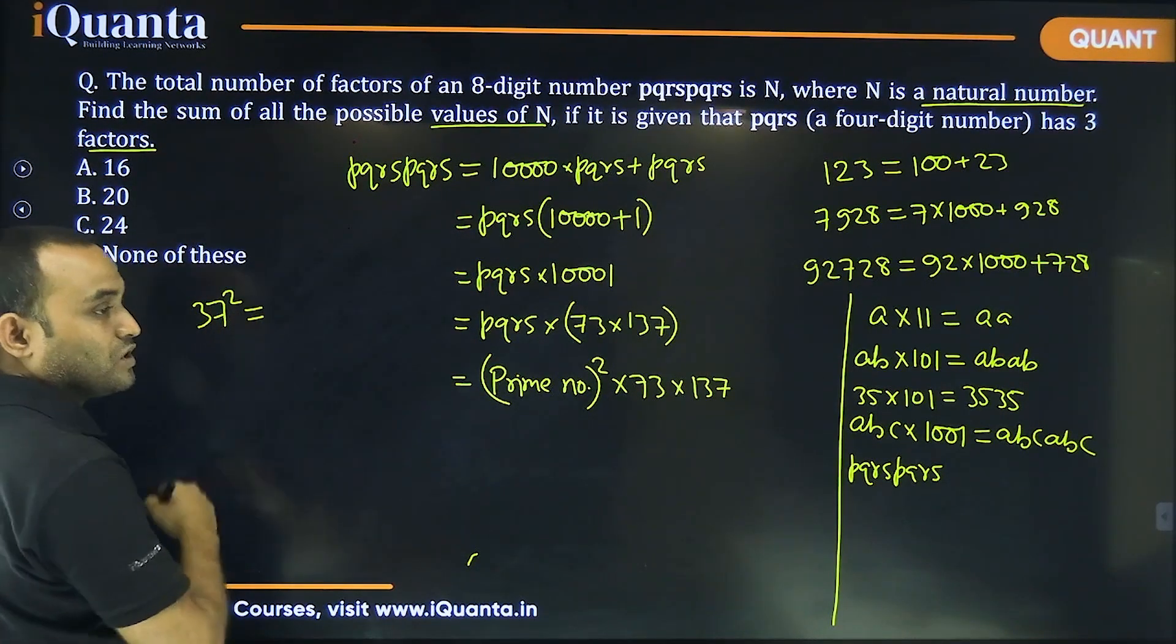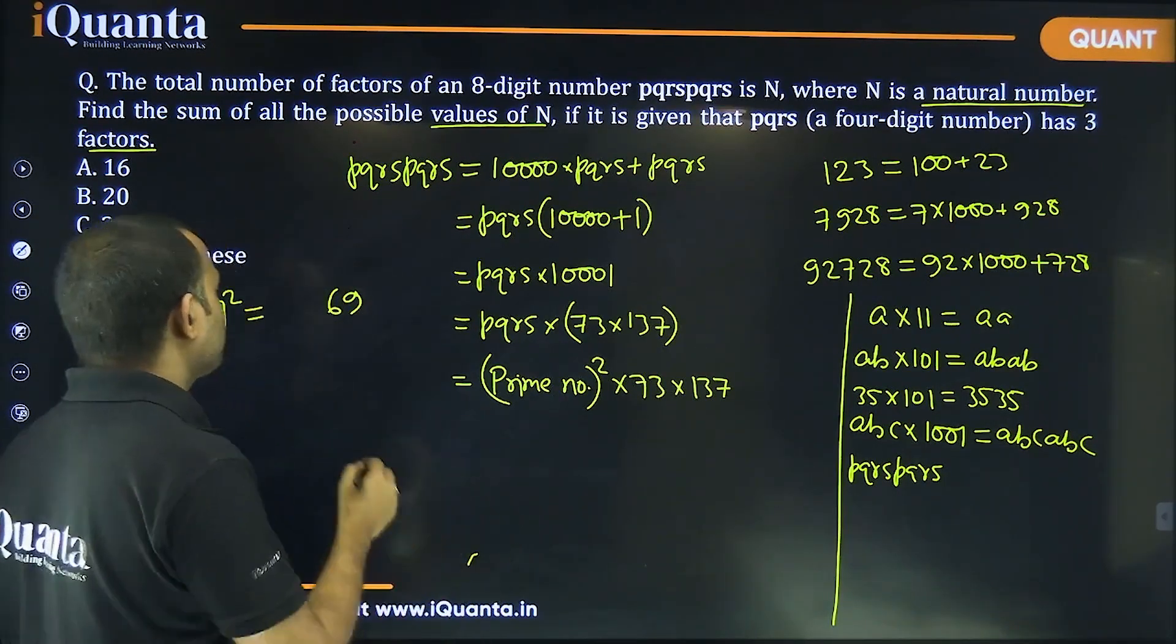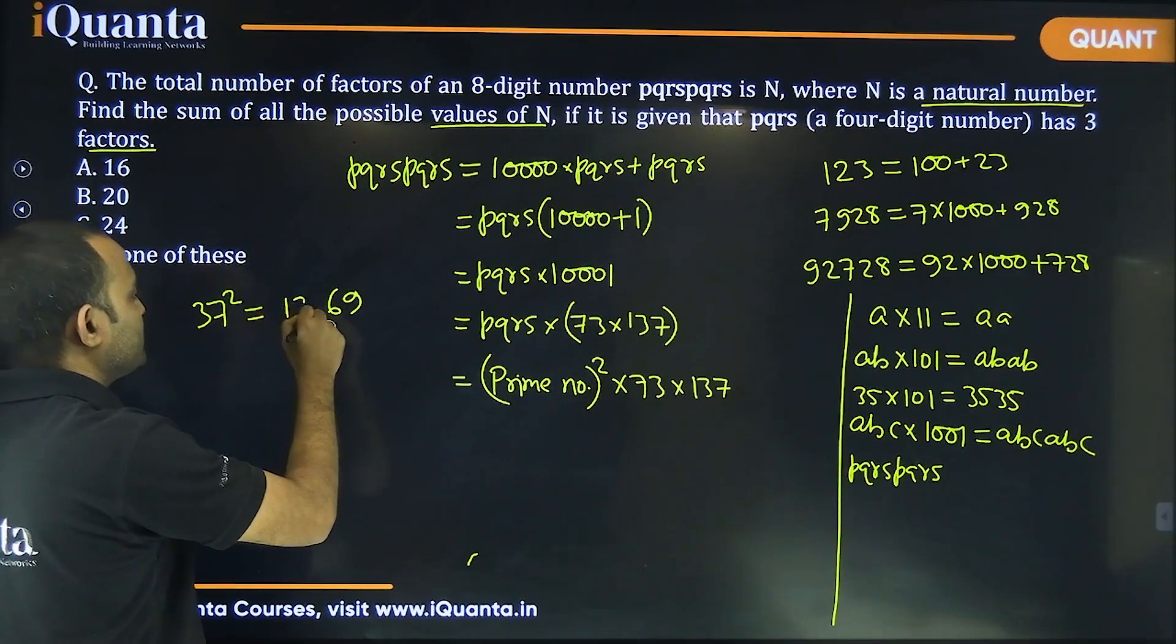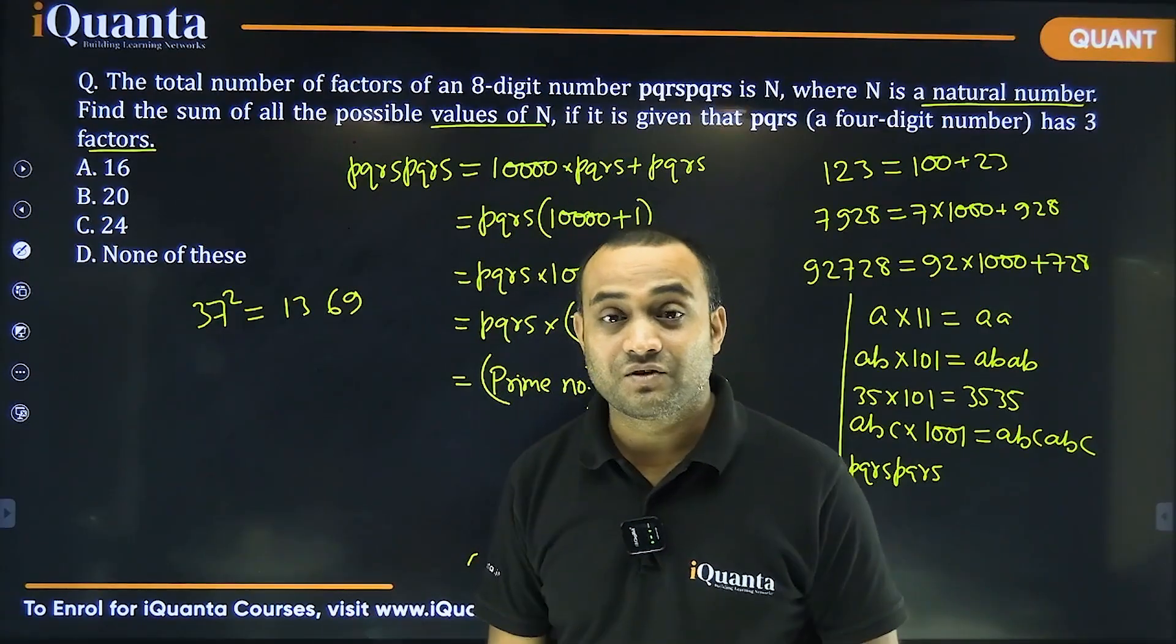That is equal to 1369. This is a perfect square, it will have exactly three factors.